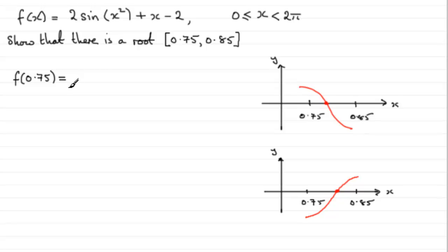What you need to do is just put this value of 0.75 into here. So, you'd have 2 multiplied by the sine of 0.75 radians plus 0.75 minus 2. And if you do that, what you'll find you'll get is minus 0.1833, and so on.